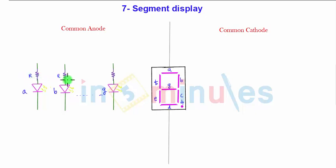Now common anode means what? This P type of the LED is called the anode section. So what I will do, I will short all the anodes to get a single anode. That is the common anode configuration.